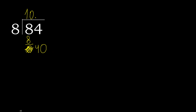40. 8 multiplied by 5 is 40. 40 minus 40 is 0, therefore finish. 84 divided by 8 is 10.5.